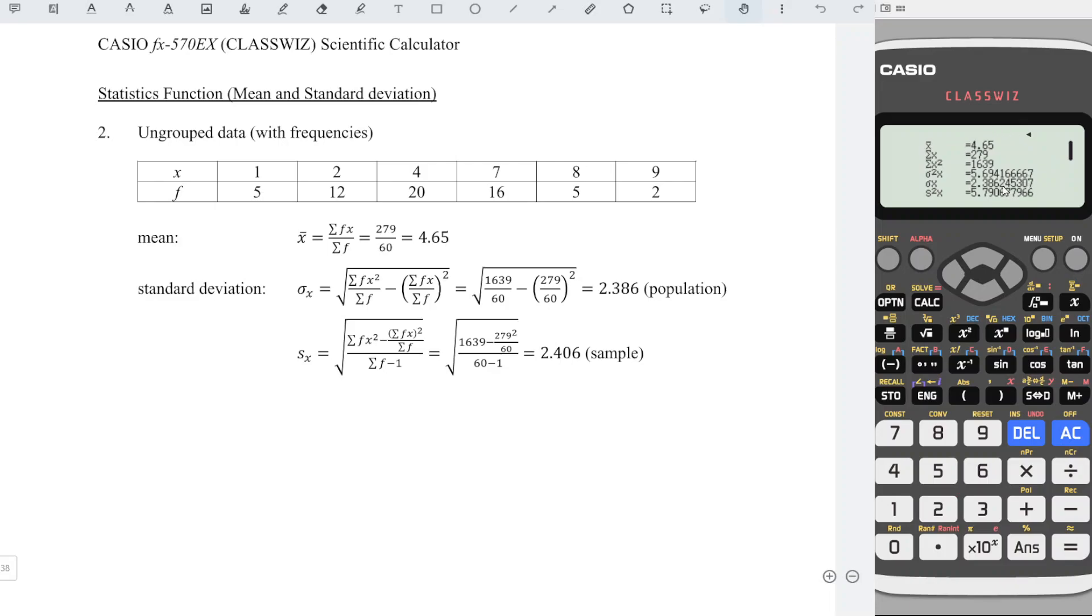And we should obtain all the statistics that we want. The summation x here stands for summation fx, which is x times f. And we should obtain 279. And the mean x bar, which is 4.65.